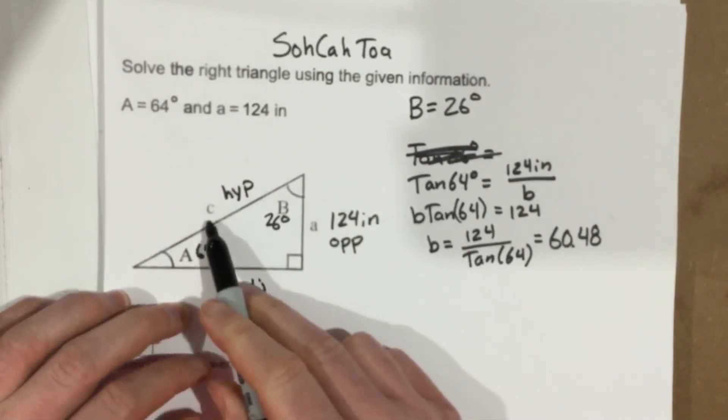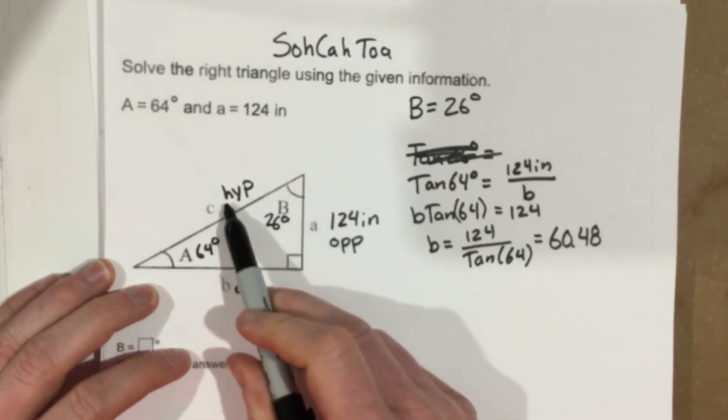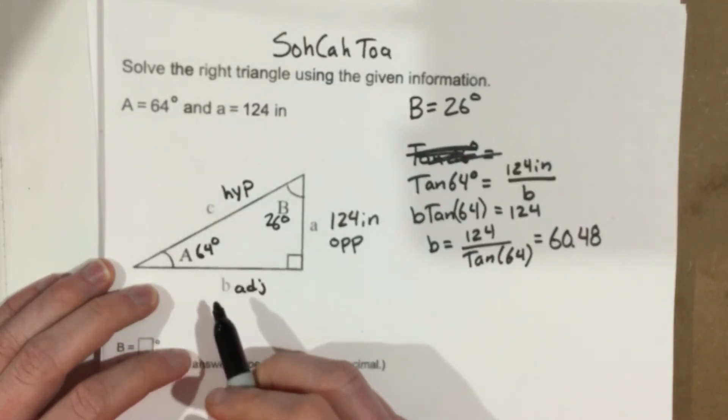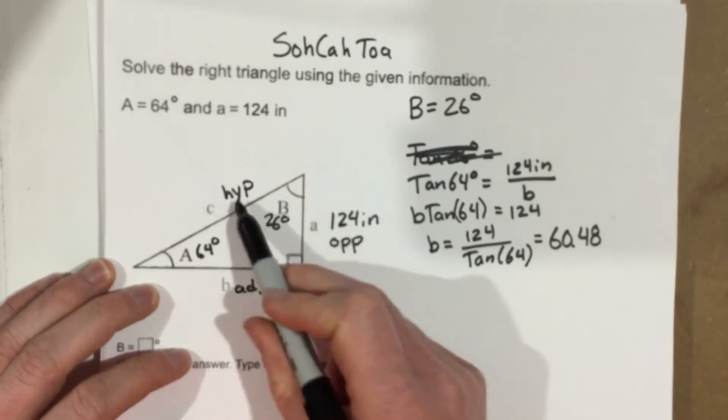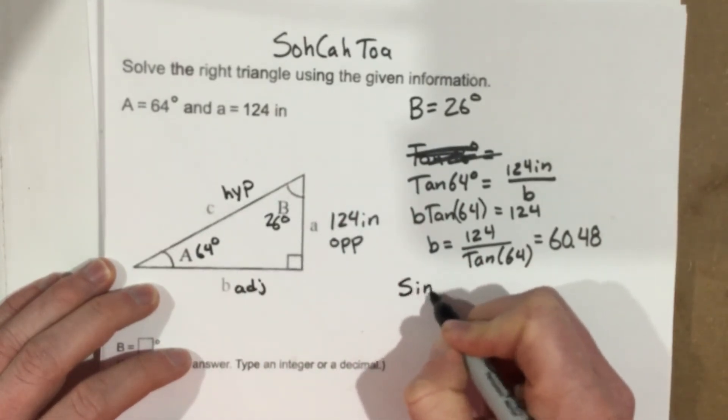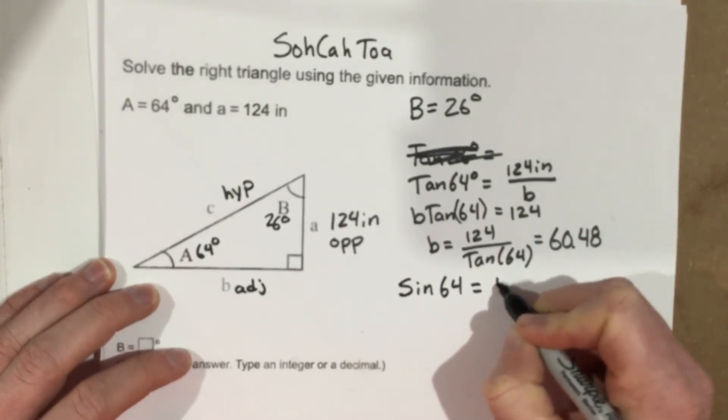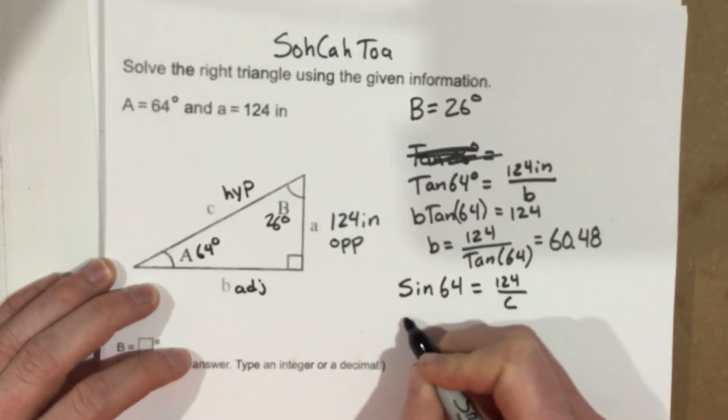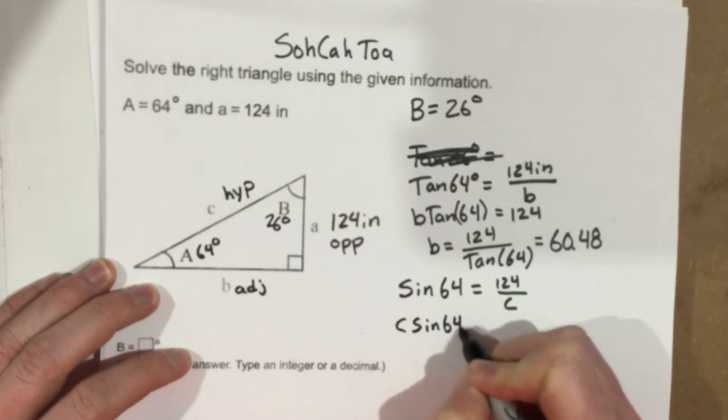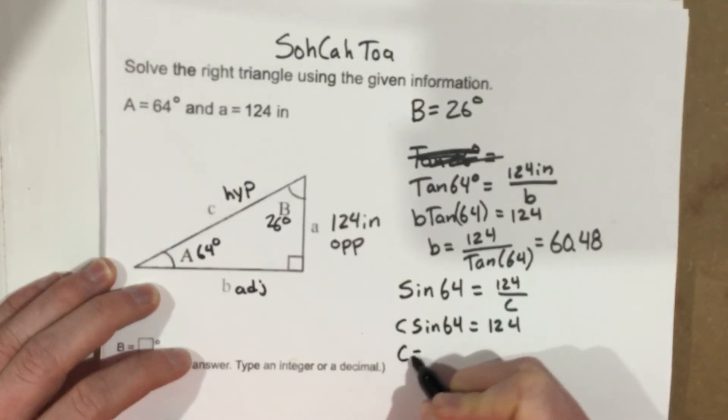Now I need to find C. So I can either use sine, because that's the opposite and the hypotenuse, or I can use the Pythagorean theorem now. I'm going to use sine this time, so I'm going to go opposite over hypotenuse, so I'm going to say sine 64 equals 124 over C. Multiply by the C, so C sine 64 equals 124. Divide by sine 64, C equals 124 over sine 64.